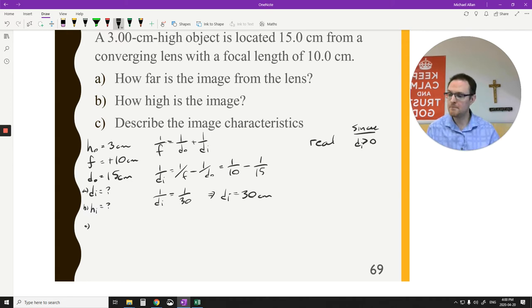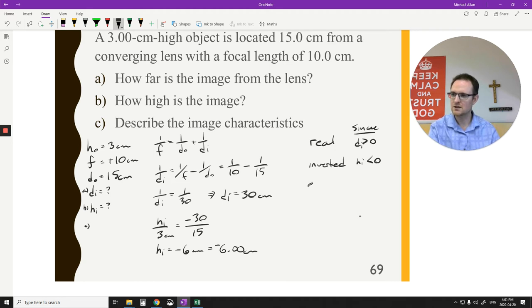So let's go through and find out how high it is. What's the height of this image? So hi over ho, which is 3 centimeters, equals negative di, which is 30, over do, which is 15. You can see that's twice the size. I'm going to assume that this is going to be twice as well. So hi is negative 6 centimeters. Because it's negative, this is going to be an inverted image. So hi is less than zero. And if you look at the two sizes there, I'm going to say that this is enlarged.